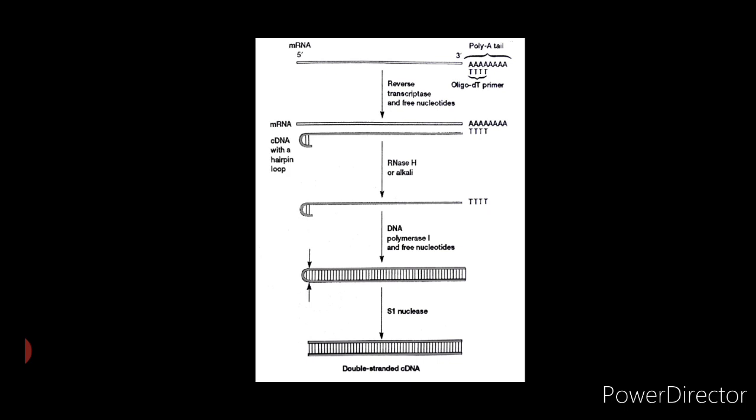First, an mRNA template with a 3' poly A tail is combined with reverse transcriptase enzyme. Second, a short oligo DT primer is added and allowed to hybridize with the poly A tail. Third,